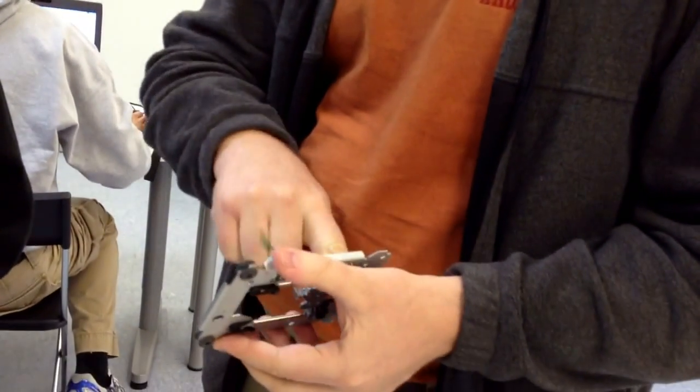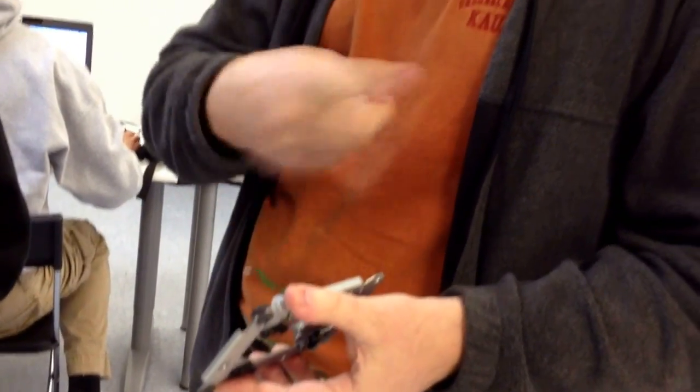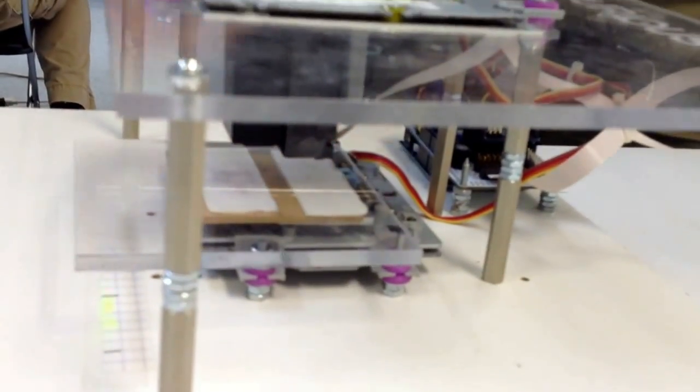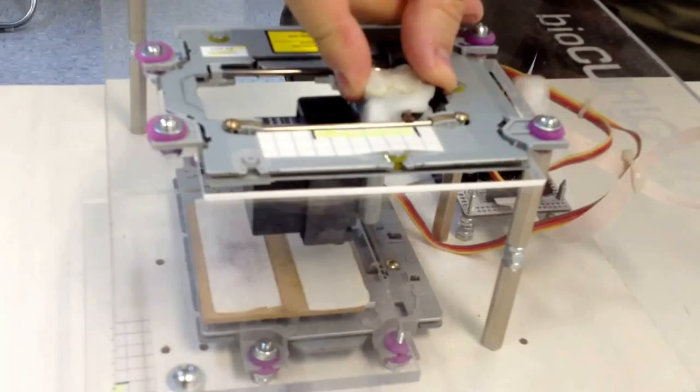This is normally where the spindle motor would be, the drive that spins the CD itself. So we have one at the bottom here that moves this platform, and we have one on the top that moves this print head.